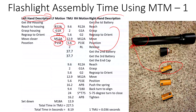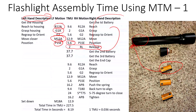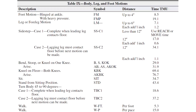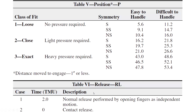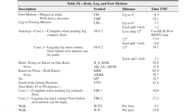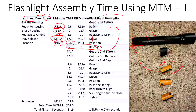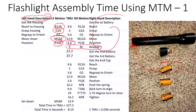For positioning, I have a simple symmetric object, so the position table value is 5.6 TMU. Then I release the battery — once positioned on the housing, the release takes about 2 TMU. The release table and position table are both self-explanatory. Getting the second battery and third battery will take about the same time: 37.7 TMU each.